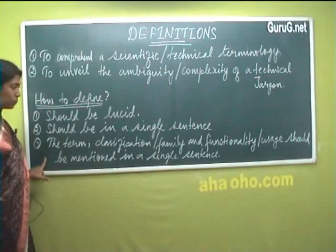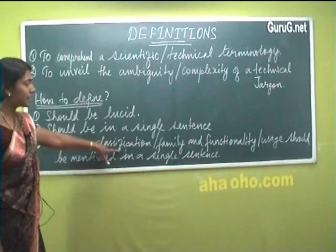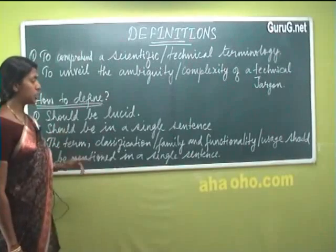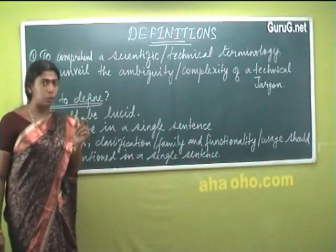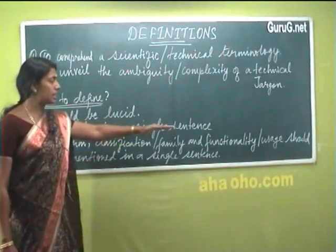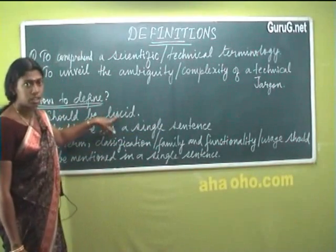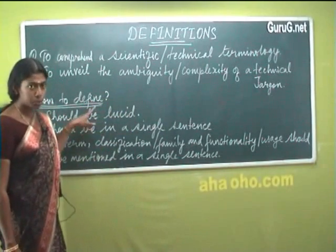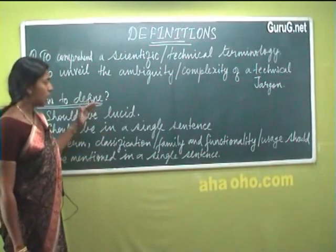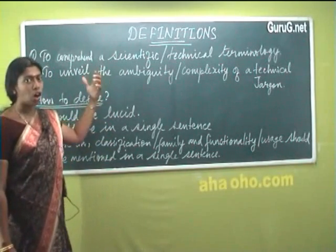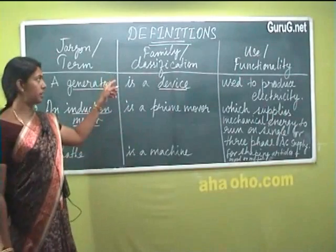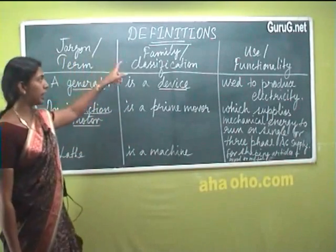Let us concentrate on the third point, which is very important. The term, the classification or the family, and the functionality and usage should all be mentioned in a sentence. When a technical word or a scientific word is given and we define it, we need to mention all these three things in a single lucid sentence. Otherwise, the definition will not achieve the purpose of making the reader understand what it means. It is very essential to have these three elements in your definition.